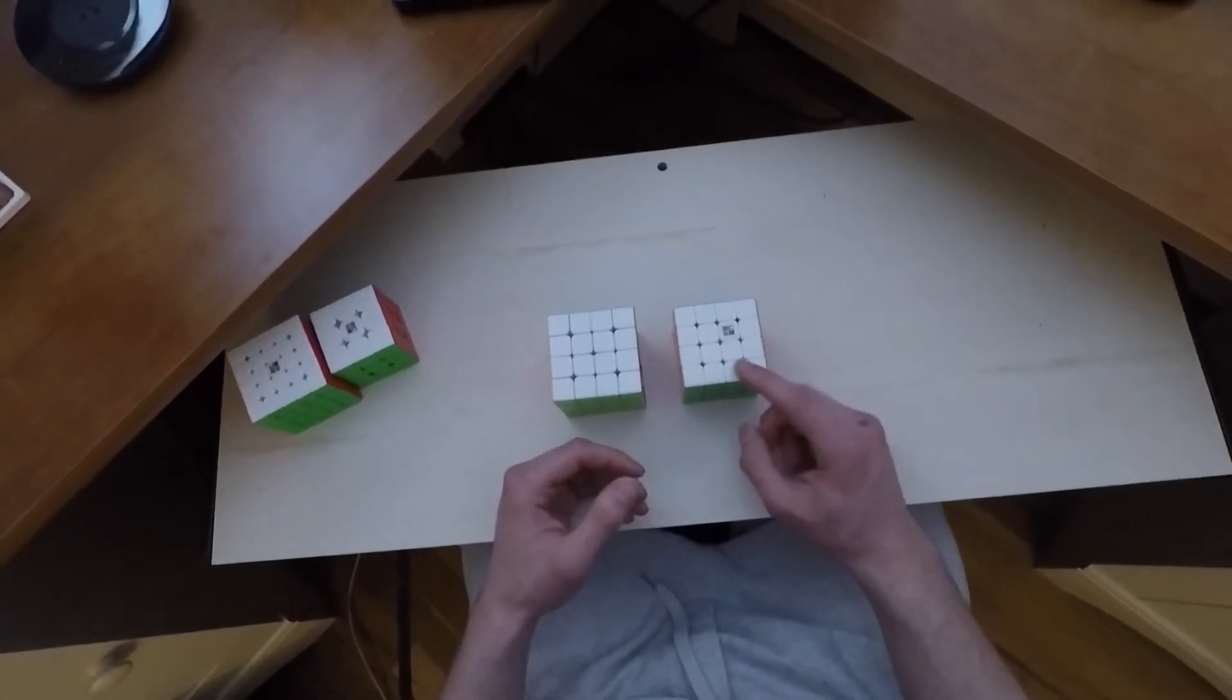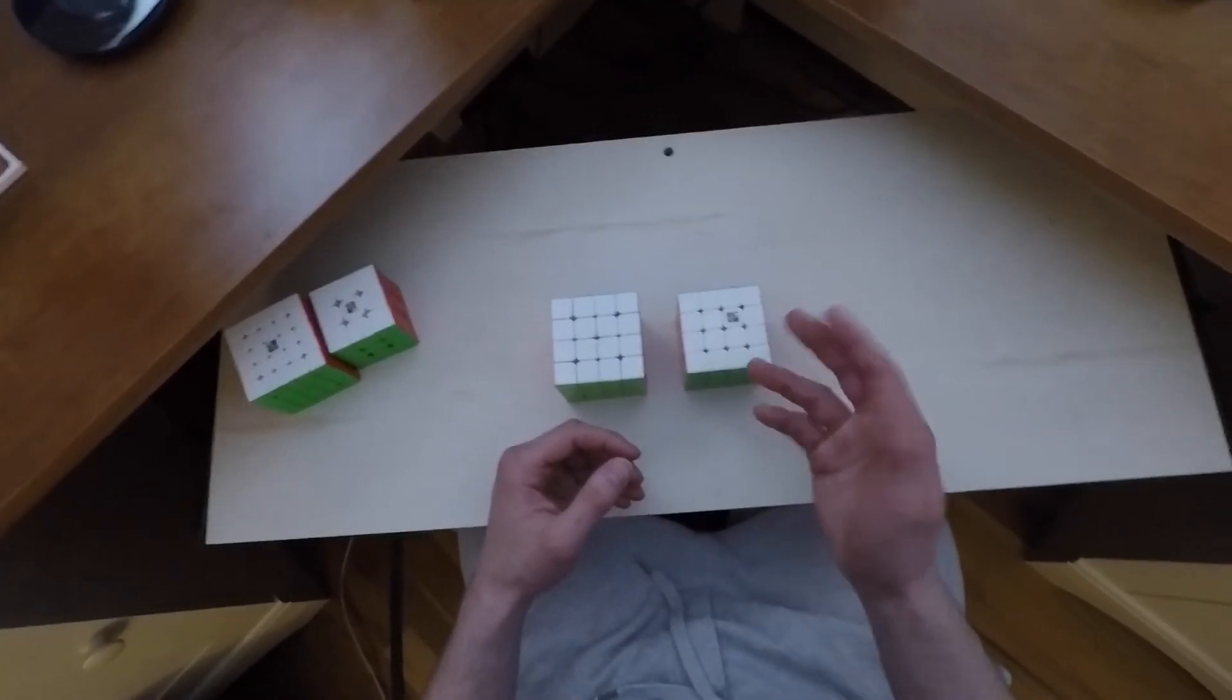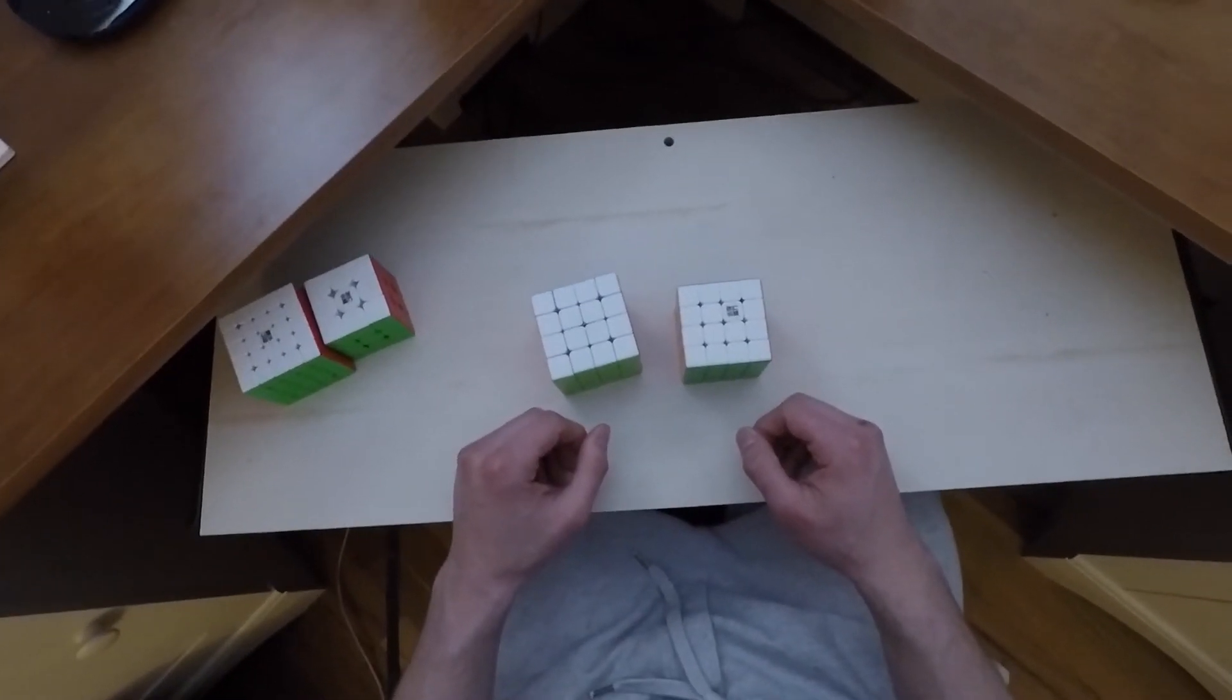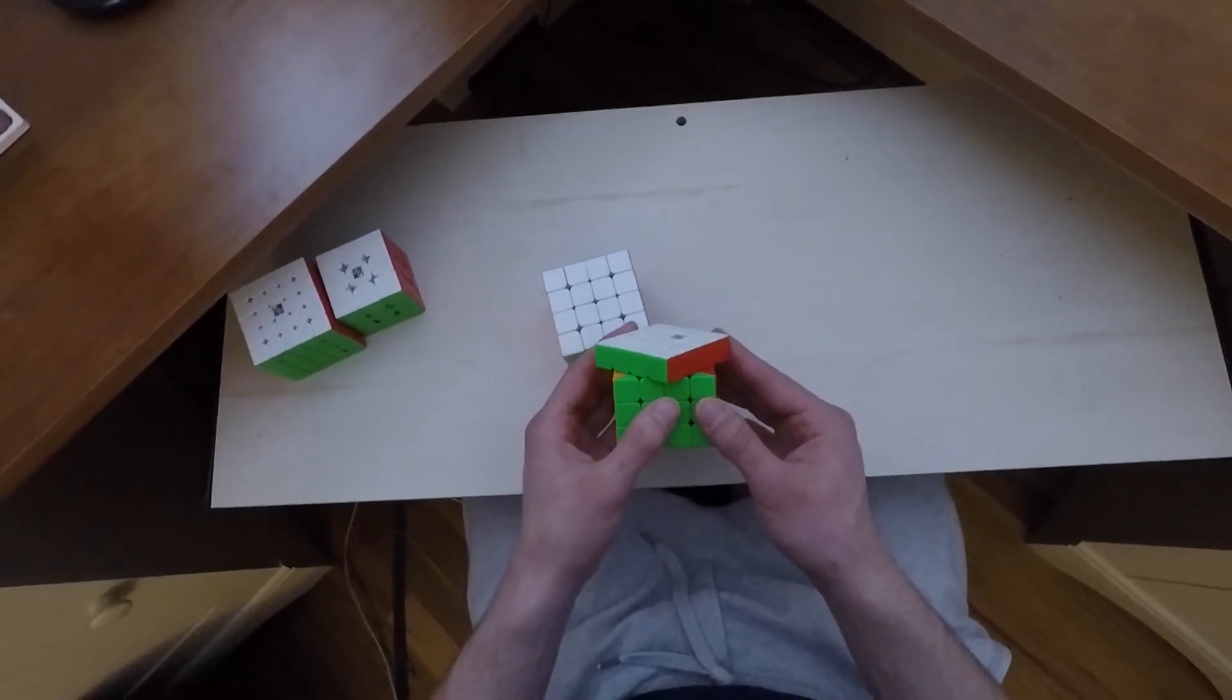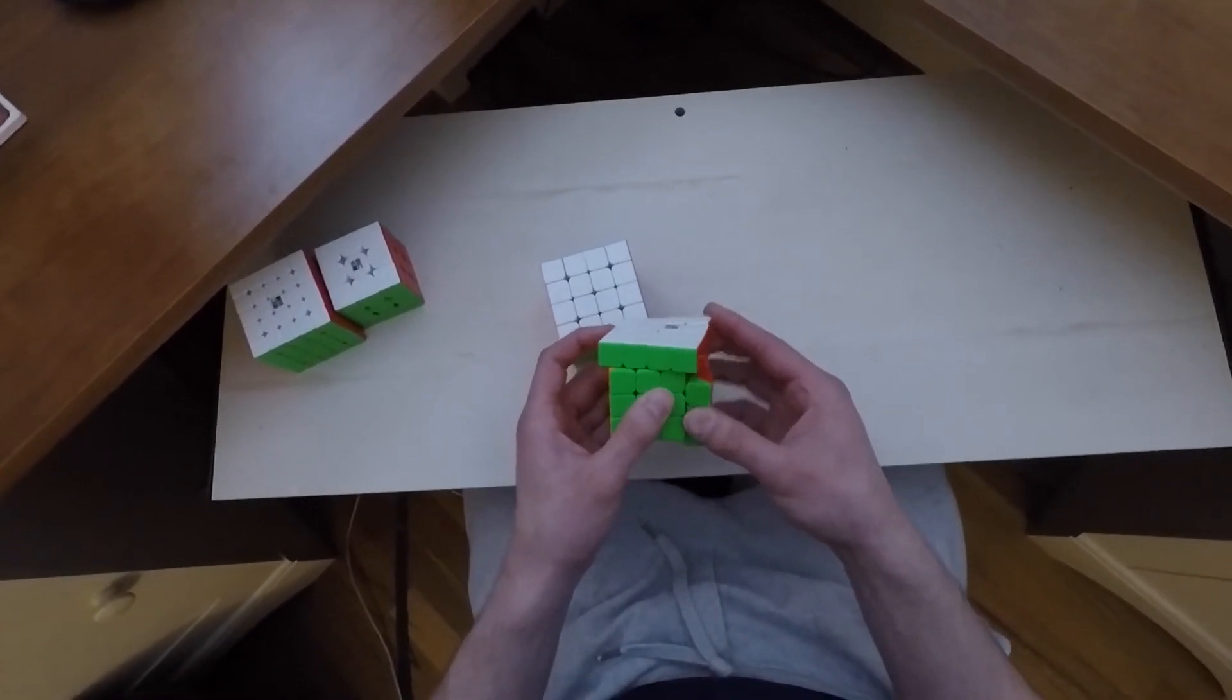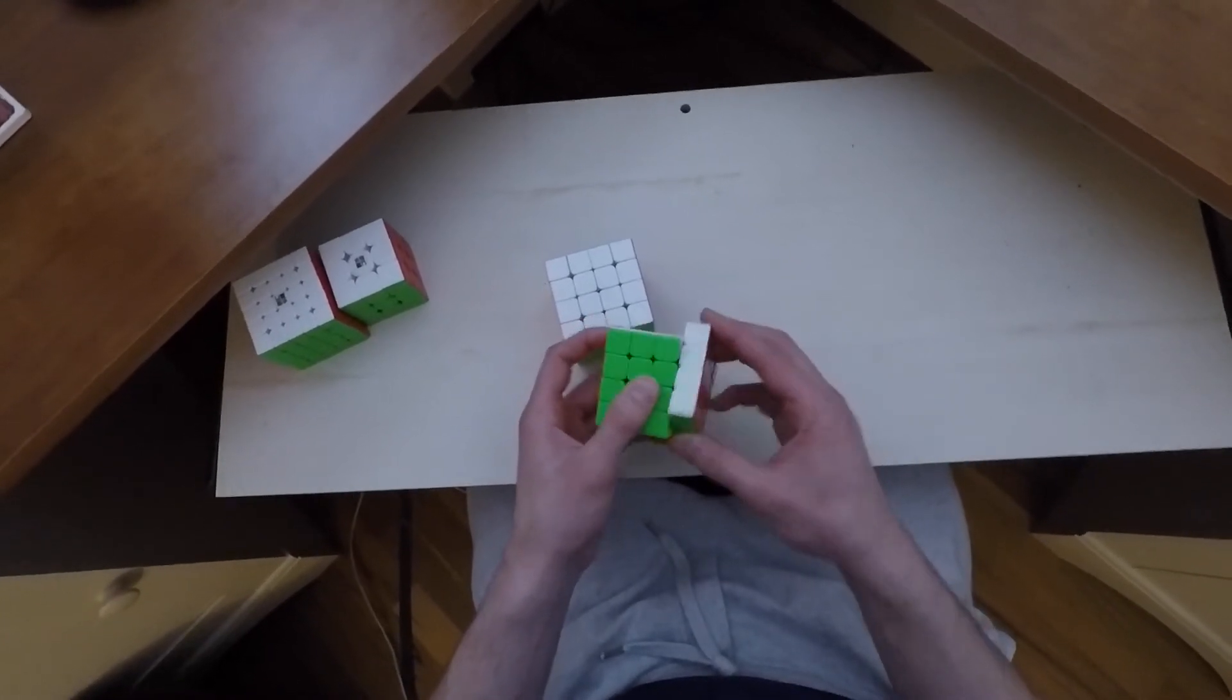But for the time being, I don't see a purpose of spending so much time trying to break this in and get used to it when I have a perfectly good option right here. If you guys want to see some corner cutting, I'm able to get just around 45 degrees, and then reverse corner cutting about half a piece. Nothing bad, pretty standard for today's cubes.